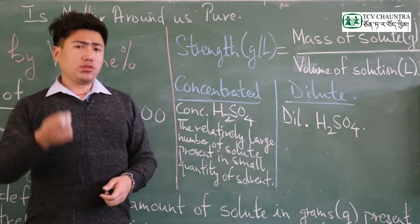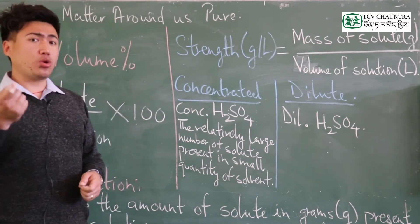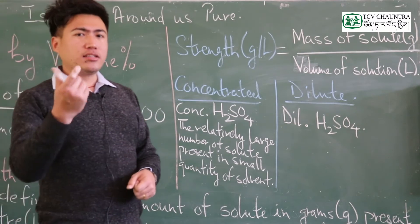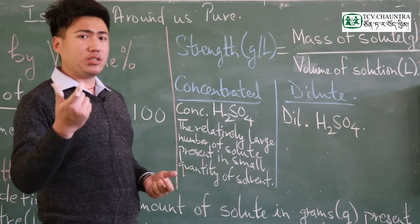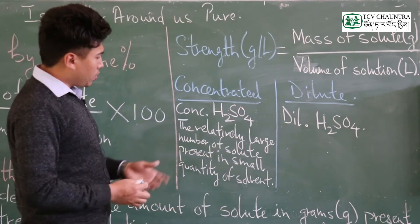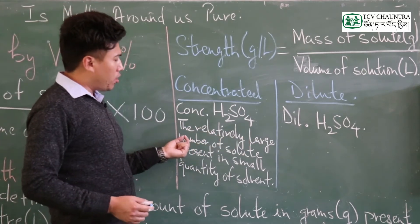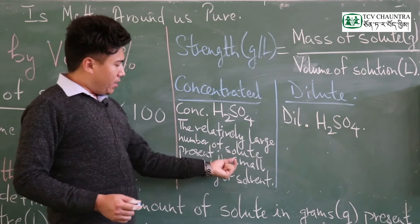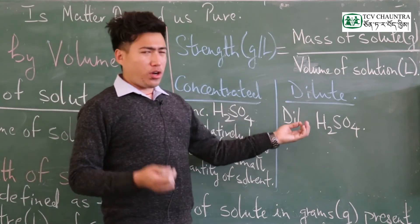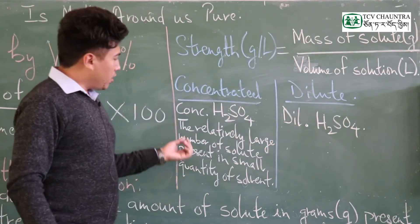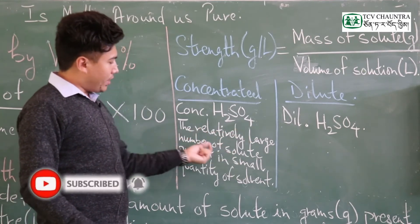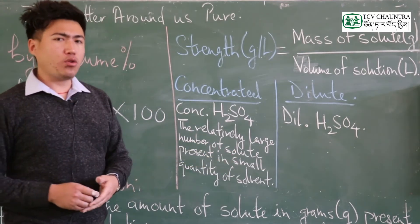Concentrated acid is a corrosive acid and must be handled carefully. A dilute solution is one that has a relatively small amount of solute present in a large quantity of solvent.